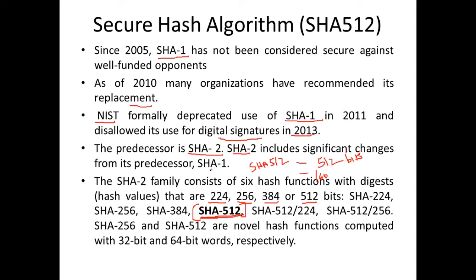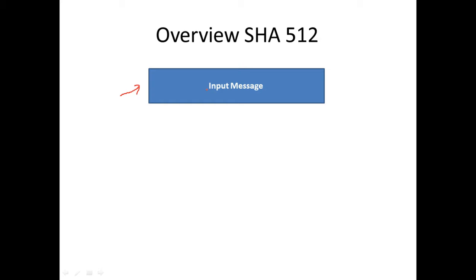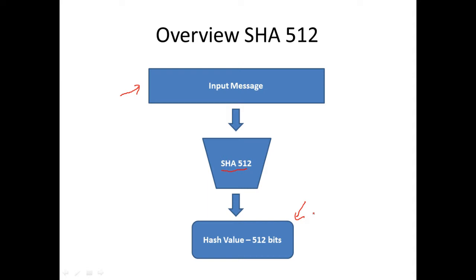If you are able to understand SHA-512, SHA-1 is pretty simple because these algorithms are built on the same foundations, but have been improved for security. SHA-512 takes a variable-length input message, passes it to the hash function, and produces a 512-bit hash value. It is a one-way function — using the 512-bit hash value, you can never recover the original input message.